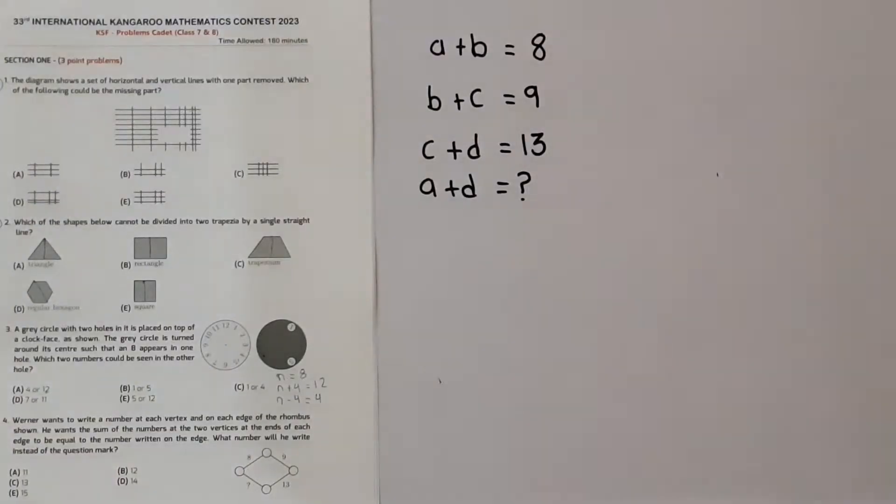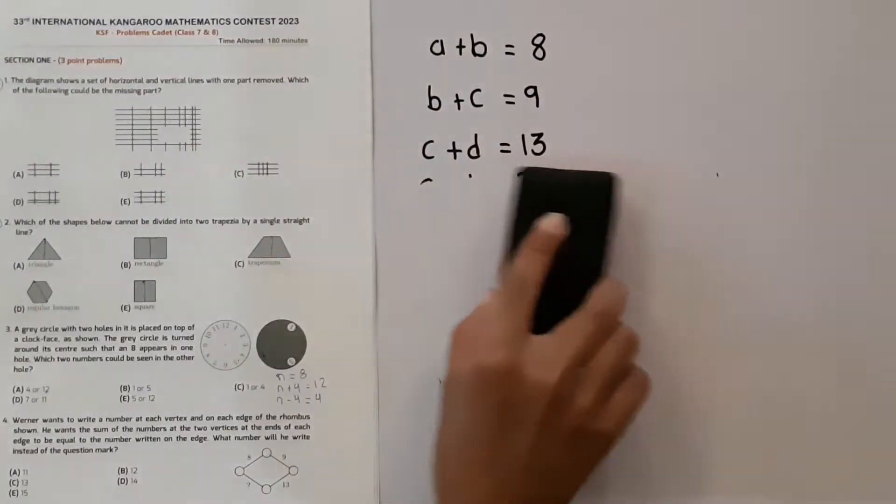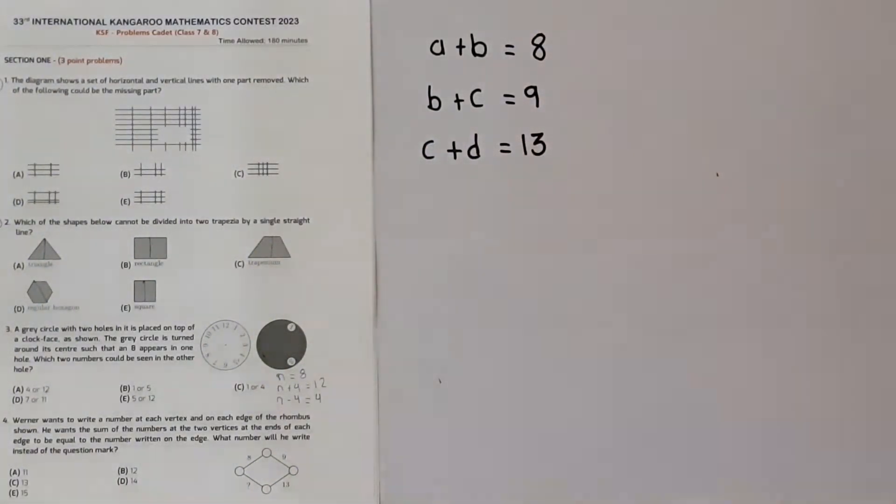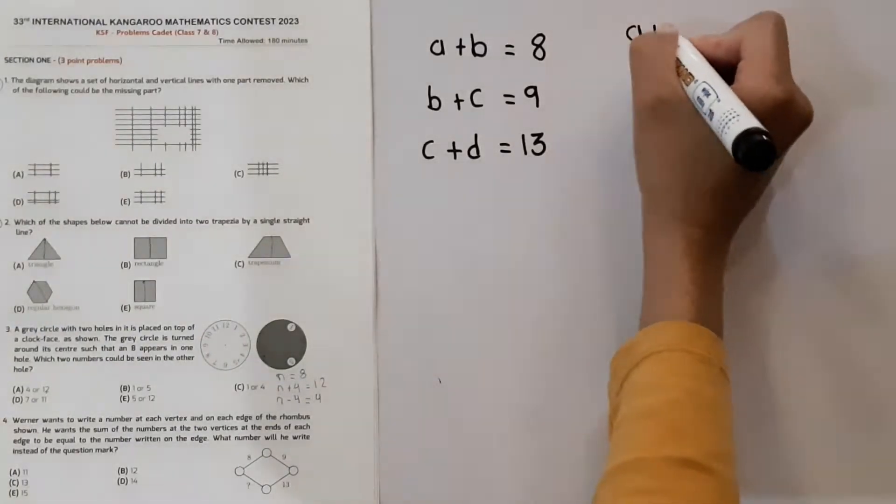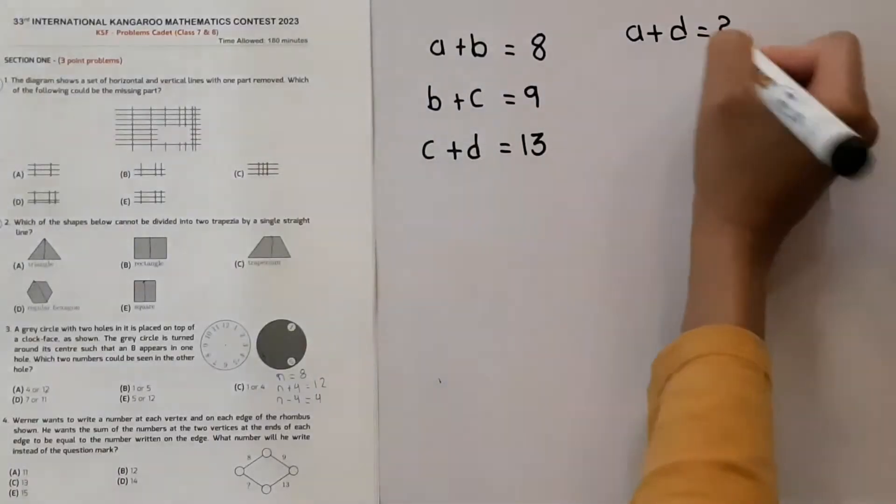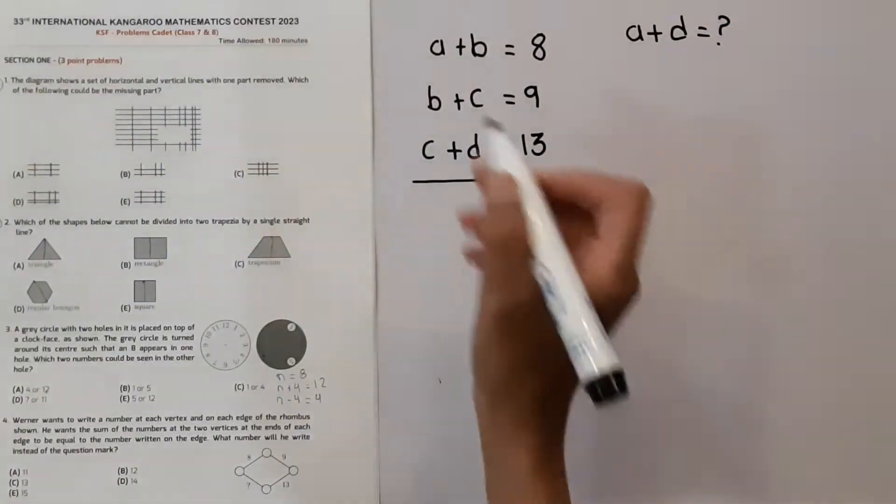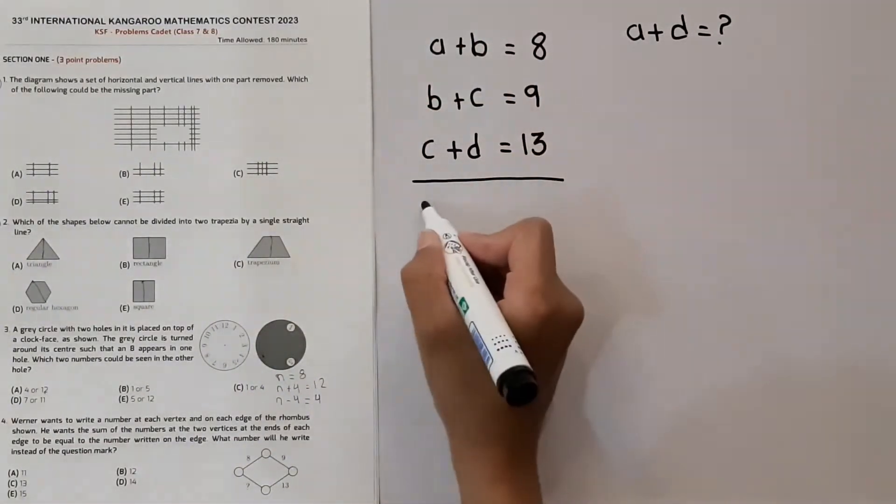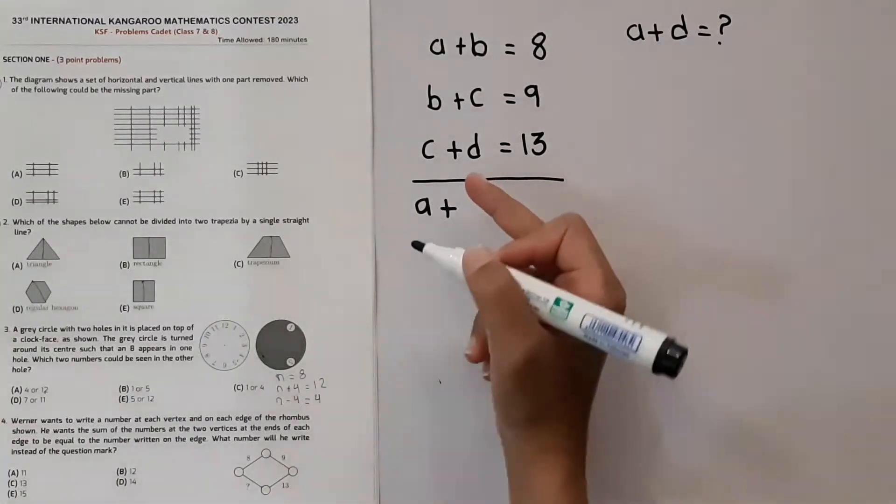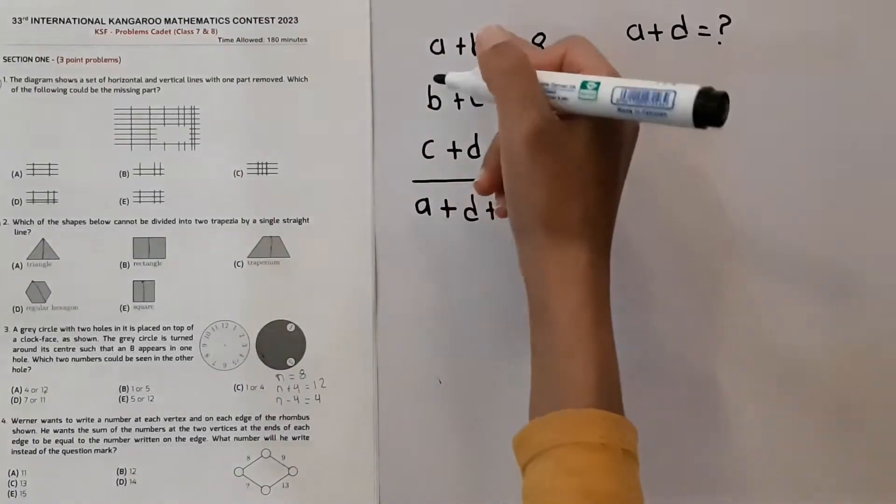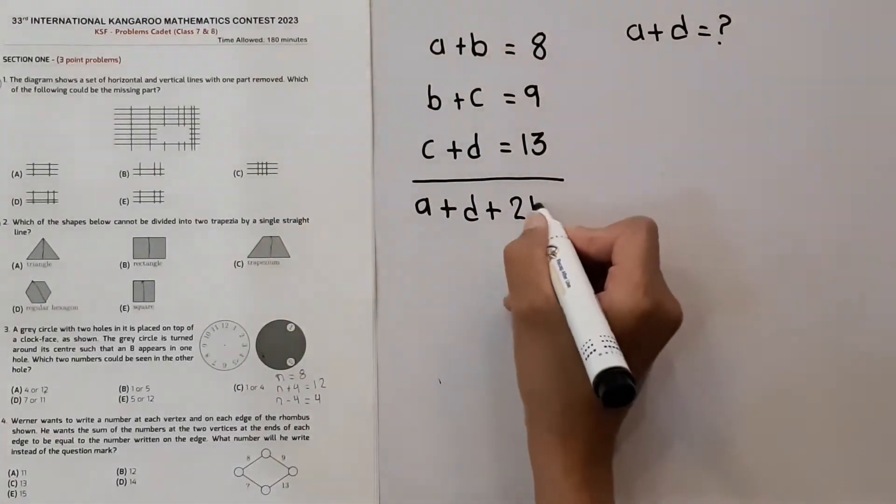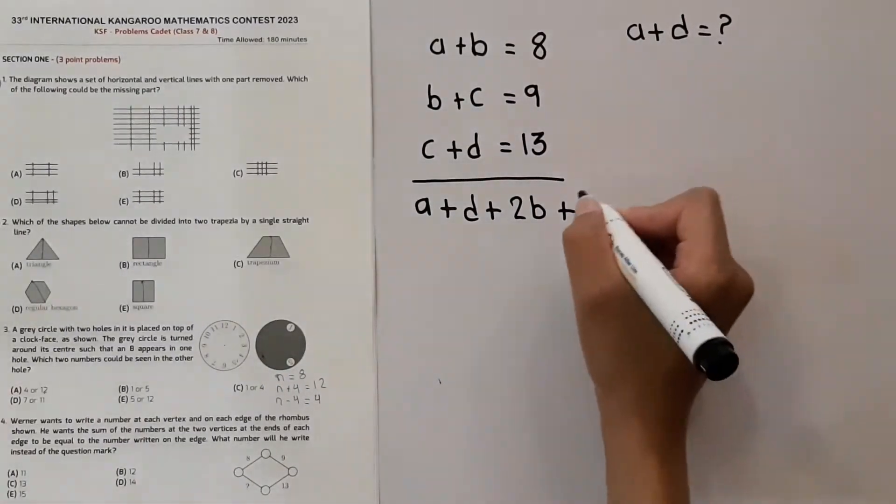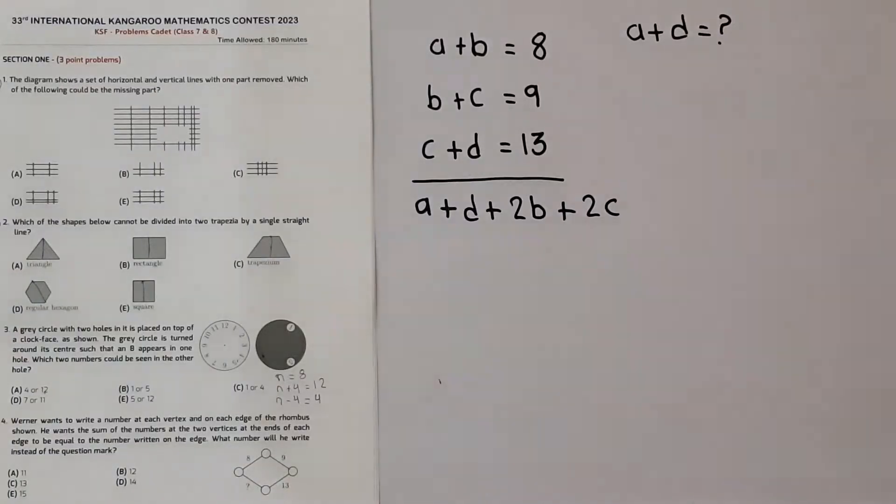We have to find A plus D. So we will add these equations. And by adding these, there is only one A. A will come as it is, plus D is only one. So D will come as it is, plus there are two B's. So two B will come, plus there are two C's. So two C will come.